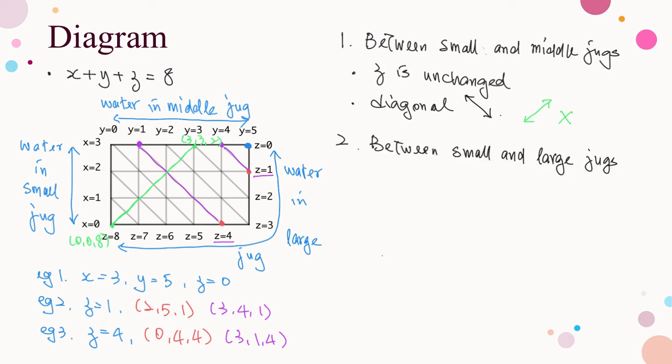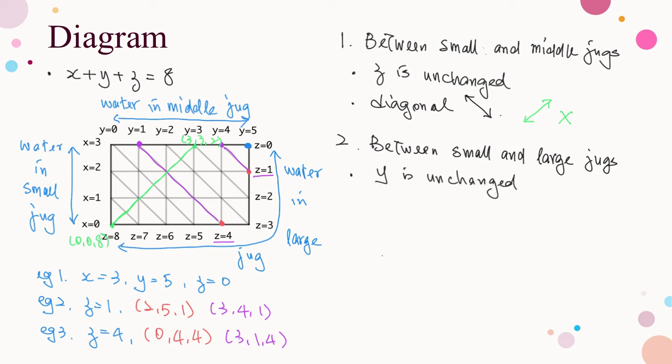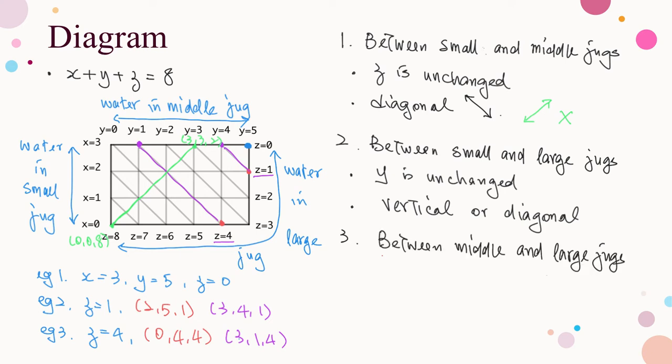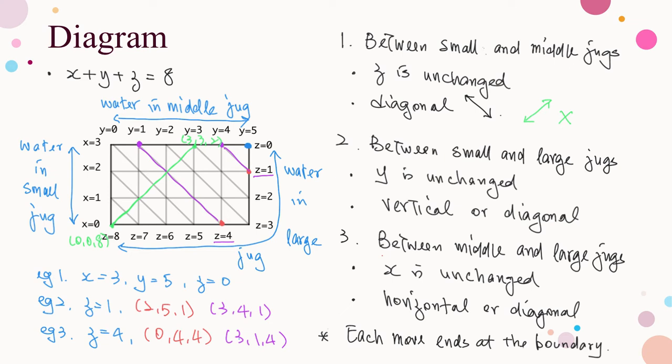Case 2: between the small and large jugs. The value of y remains unchanged, so such a move is represented by a vertical line or a diagonal line between upper left and lower right. Case 3: between the middle and large jugs. The value of x is unchanged, so the move is represented by a horizontal line or a diagonal line between upper left and lower right. Since there are no markings on the jugs, when pouring water from one jug to another, the water in the first jug needs to be emptied. Therefore, each move must end at the boundary of the rectangle.